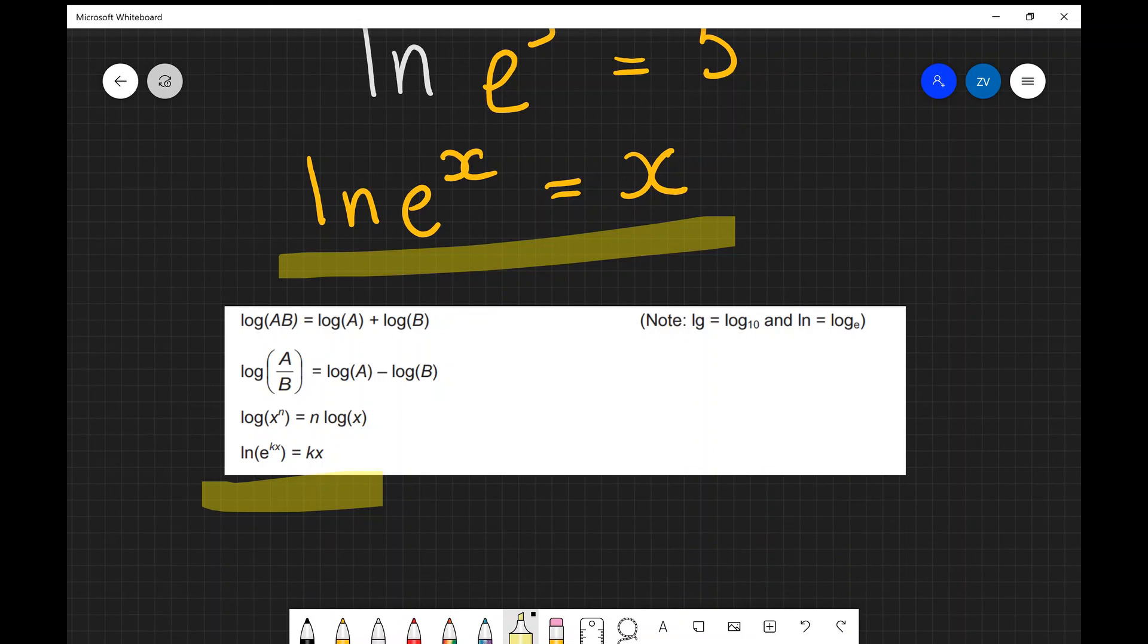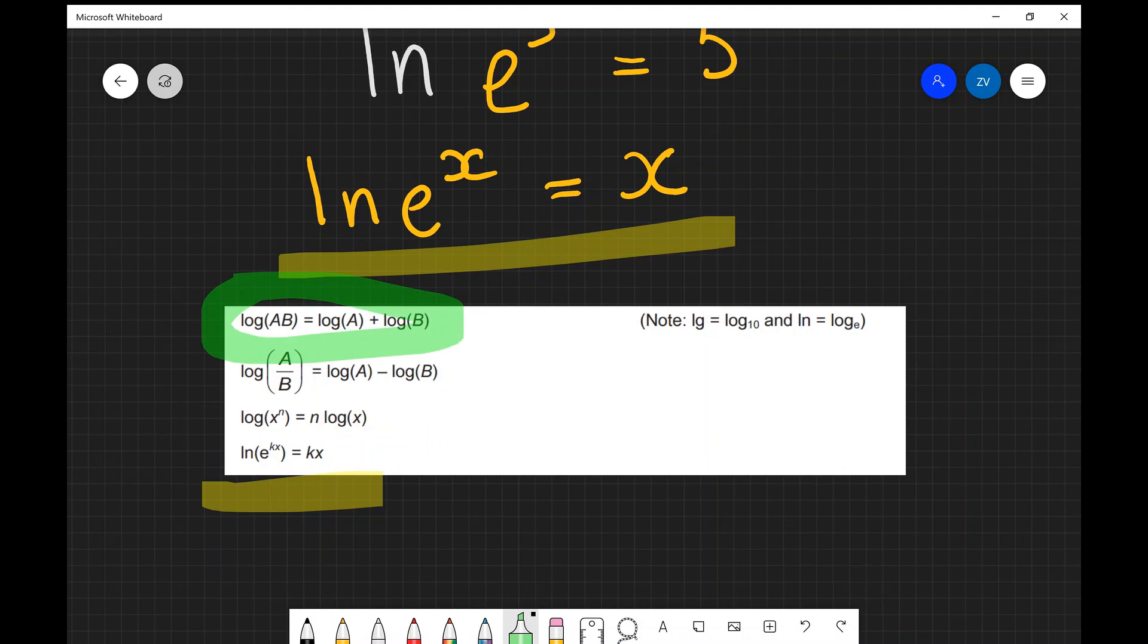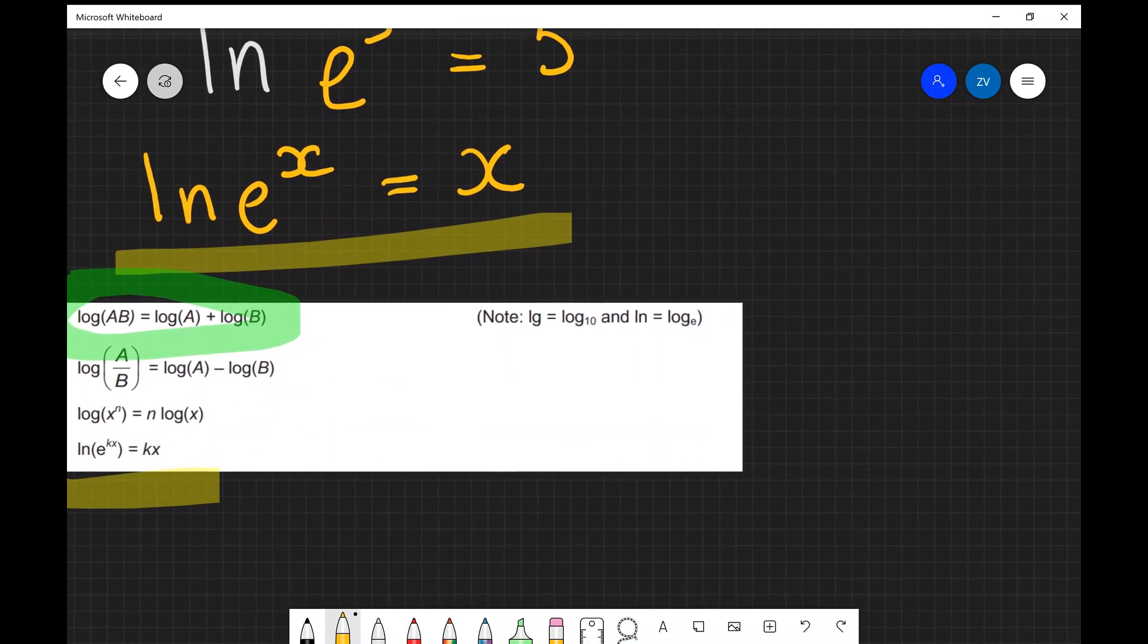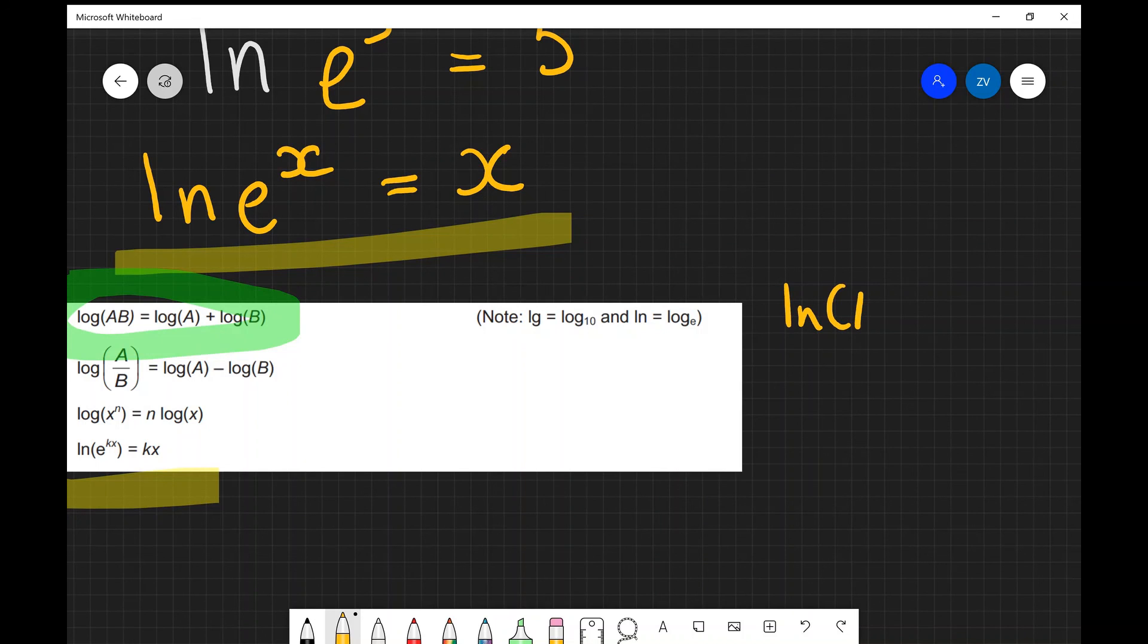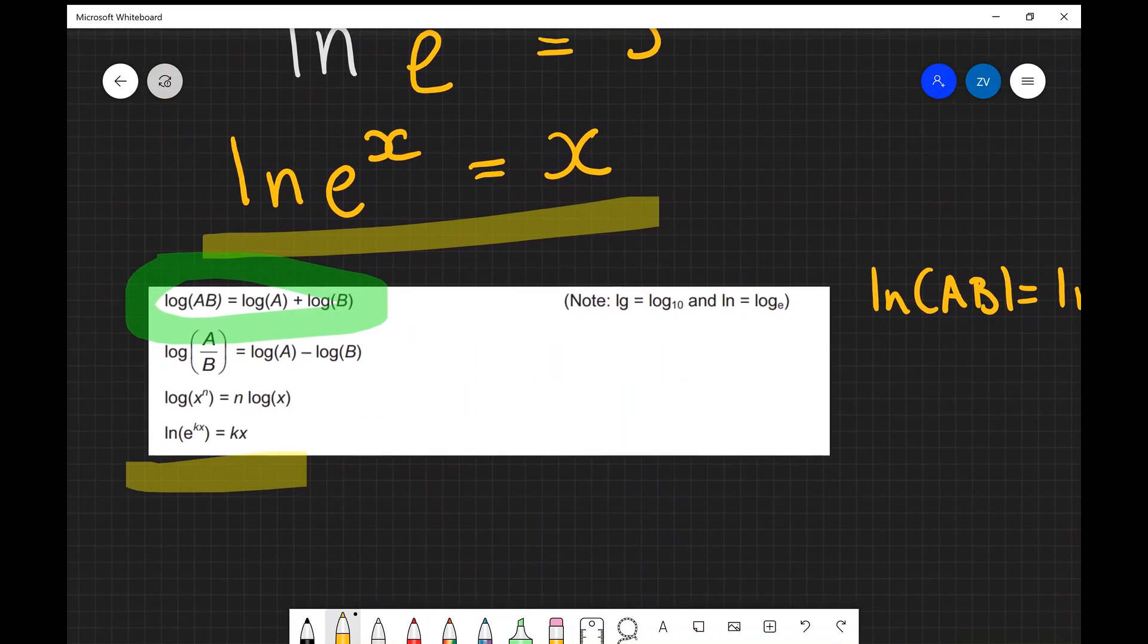Notice that there are two other really important rules which are a little bit counter-intuitive for logs. But if you have the logarithm of a times b, this is actually equal to log of a plus the log of b. This also applies for natural logs, so for instance if I was to have the natural log of ab this will be equal to ln of a plus the natural log of b.